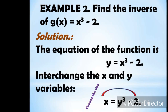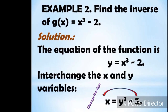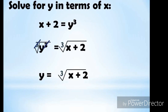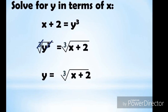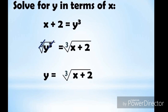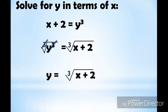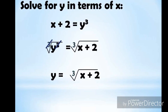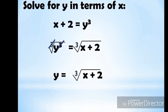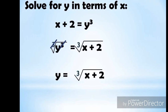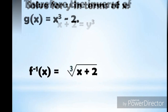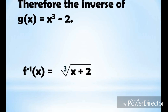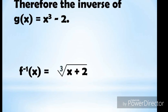Next, transpose −2 to the other side to solve for y in terms of x, giving x + 2 = y³. To eliminate the exponent, cube root both sides to cancel the exponent 3, giving y = ∛(x + 2). Therefore, the inverse of g(x) = x³ − 2 is f⁻¹(x) = ∛(x + 2).